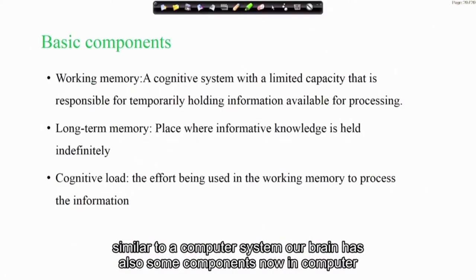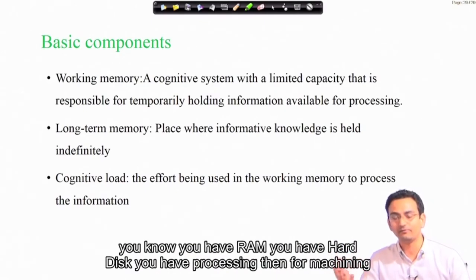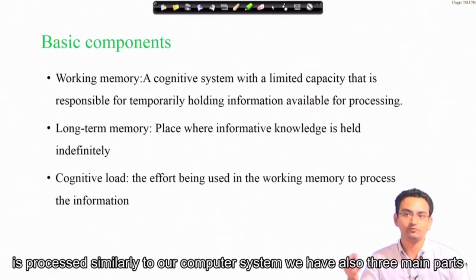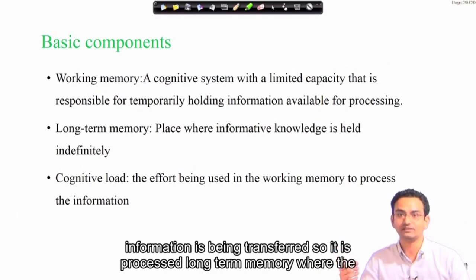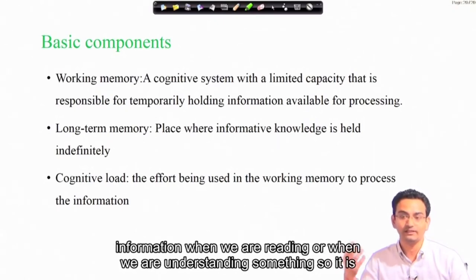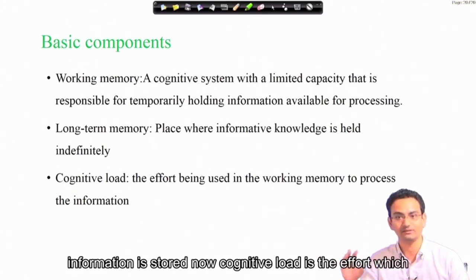Similar to a computer system, our brain also has some components. In a computer you have RAM, you have a hard disk, and information is processed. Similarly, we have three main parts: working memory, where the cognitive system processes information being transferred; and long-term memory, where information is stored — just like a hard disk in a computer.